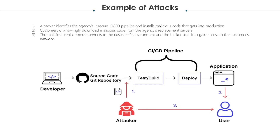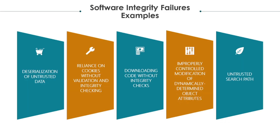In a given attack scenario, a hacker identifies the agency's CI/CD pipeline and installs malicious code that gets into production. Customers unknowingly download malicious code from the agency's replacement servers. The malicious replacement connects to the customer's environment and the hacker uses it to gain access to the customers' network. Some commonly manifested software integrity security misconfigurations include: deserialization of untrusted data, reliance on cookies without validation and integrity checking, downloading code without integrity checks, and improperly controlled modification of dynamically determined object attributes.